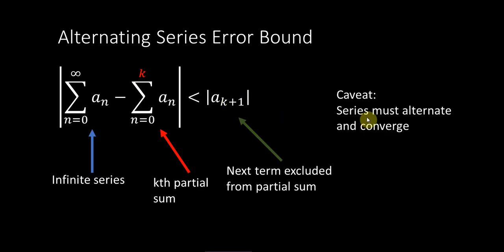Of course, we have to caveat that the series must alternate, hence the name alternating series error bound, and that it must converge. And again, look at the links for a proof or at least an explanation of more detail in the alternating series error bound.